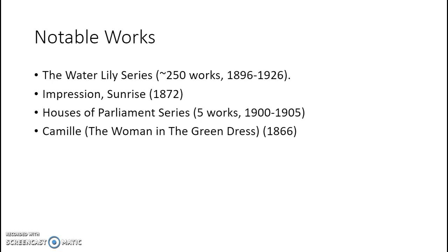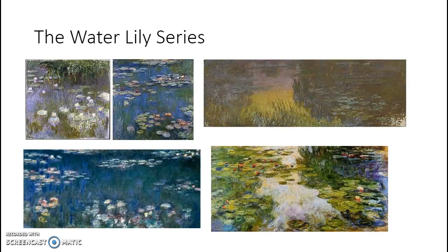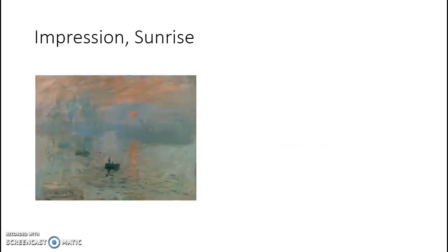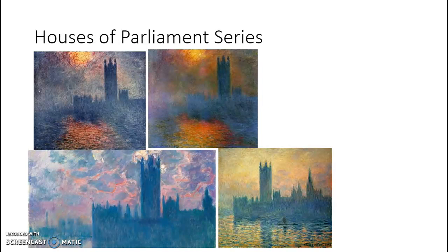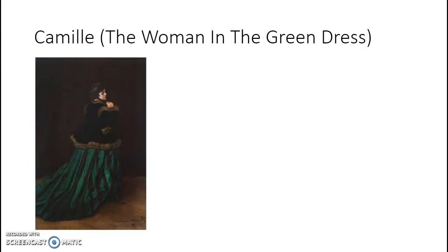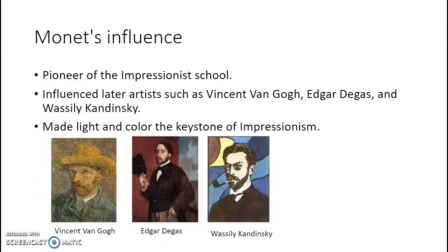Let's take a look at some of these works. This is the famous Water Lilies series, heavily inspired by his garden at his home in Giverny, France, painted during the latter part of his career when he retired there. Now this is Impression, Sunrise, the work that gave name to the Impressionist movement. This is his House of Parliament series that he painted while in London. And this is his depiction of his first wife and favorite model.